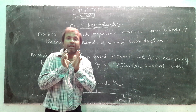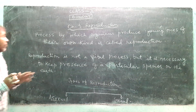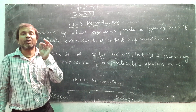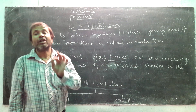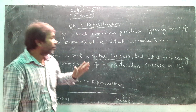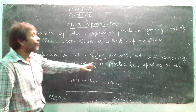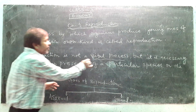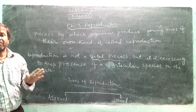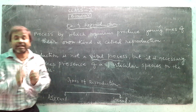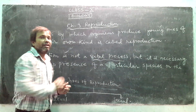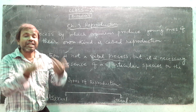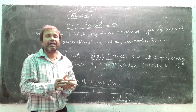The young ones must look similar to their parents. Now, reproduction is not a vital process. This means reproduction is not necessary to survive, but it is necessary to keep the presence of a particular species on the earth. Reproduction is not necessary for individual survival, but to keep the presence of that species on the earth, it is necessary.